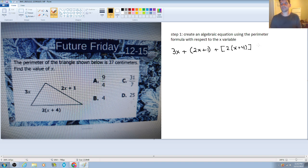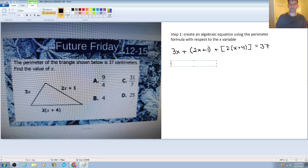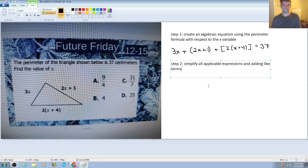Now, remember, this is an equation, so it's going to be equal to the perimeter that we were given, which is going to be 37. So step 2 is going to be to simplify all applicable expressions and combine like terms. You can almost break this down into two parts. Step 2a is simplify all applicable expressions. And step 2b will be to combine like terms.